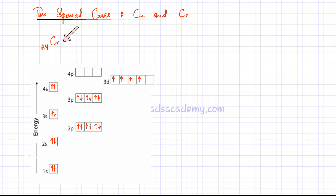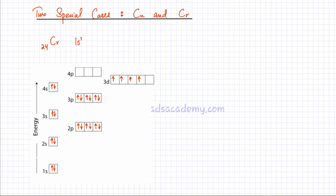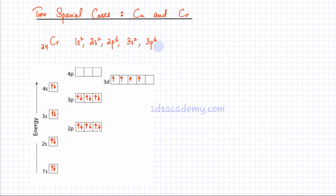Chromium has a total of 24 electrons, so I need to write the electronic configuration. The normal way of writing the electronic configuration is using the Aufbau principle, starting with the lowest energy subshell. That is: 1s2, 2s2, 2p6, 3s2, 3p6, 4s2, and then I am left with 4 electrons, so 3d would have a total of 4 electrons.